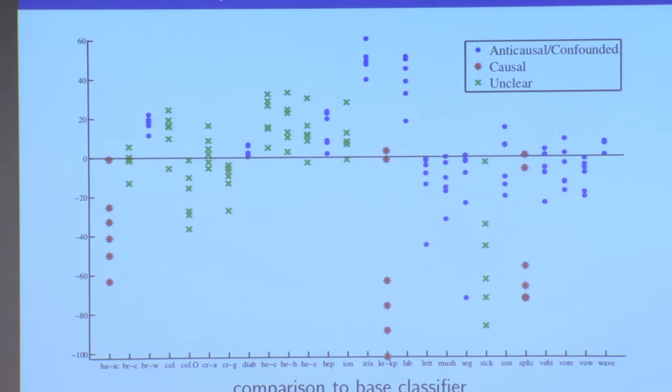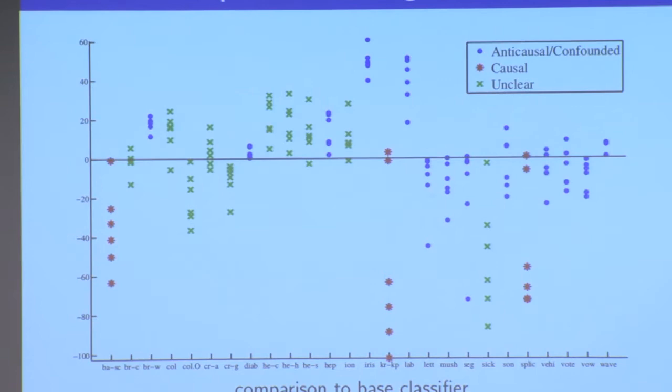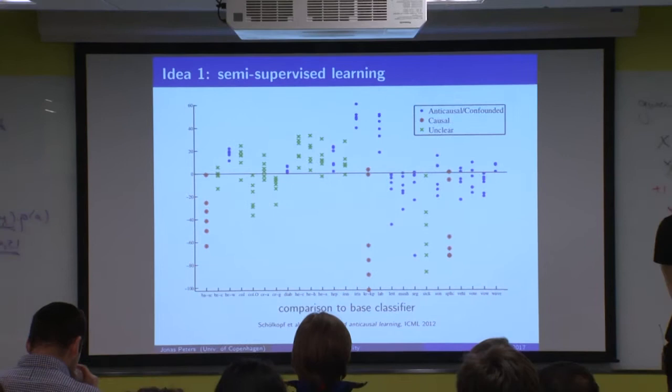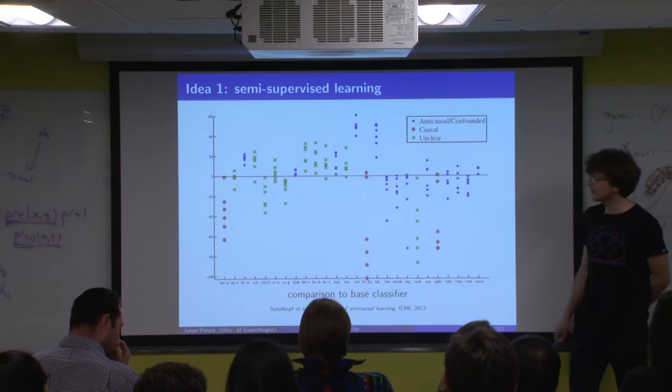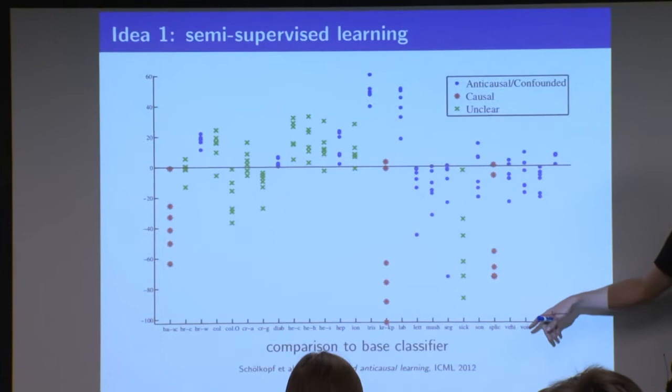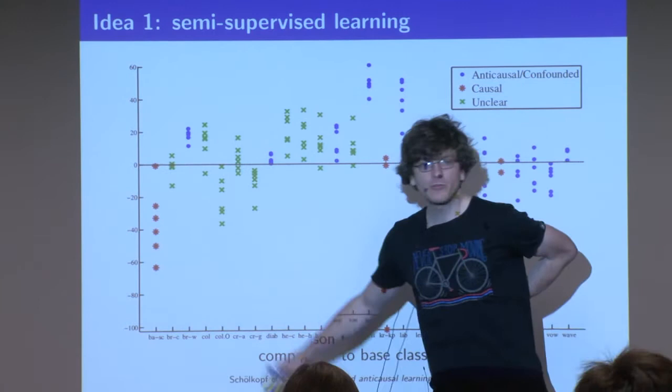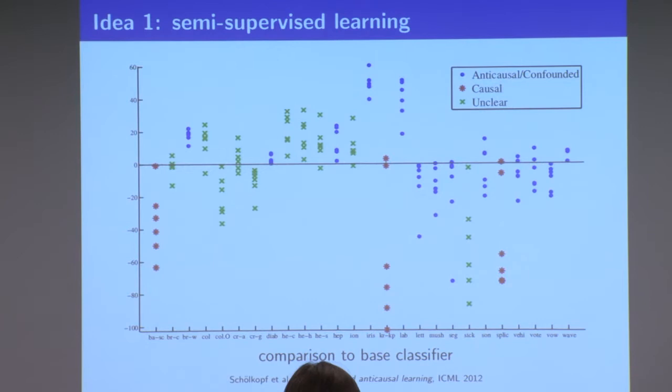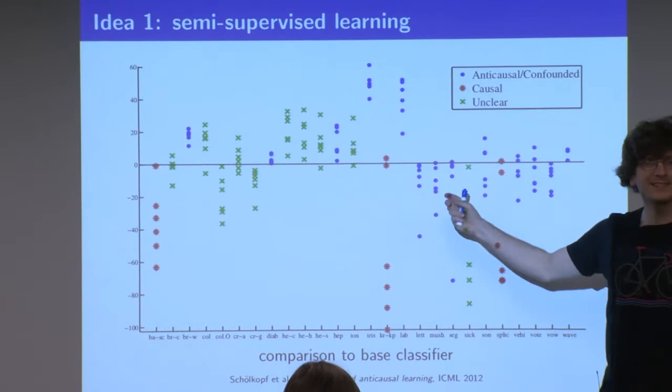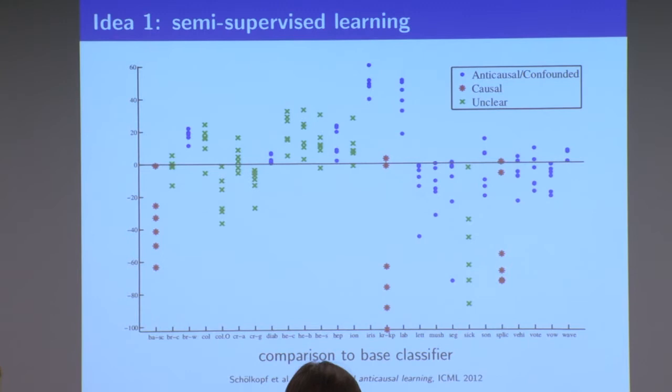We are not saying that in any other setting semi-supervised learning will work very well. We are just saying: if you are trying to do it in a causal setting, it's a bit of a risky thing to do. The core assumption of semi-supervised learning — that the decision boundary lies in a low-density region — is exactly establishing a link between p(y|x) and p(x). And the causal independence of mechanisms principle says these should be independent when x causes y.